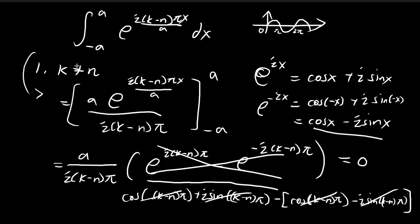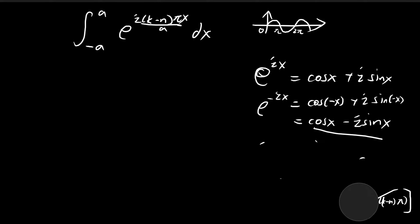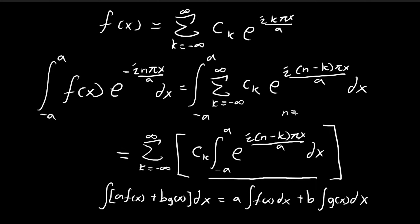Now let's consider the second case when k is equal to n. When k equals n, k minus n equals zero, so the exponent becomes e to the power of zero, which is just 1. We're simply integrating 1 from negative a to a, which equals 2a. So to summarize: when k is not equal to n, the integral is zero; when k is equal to n, the integral equals 2a.